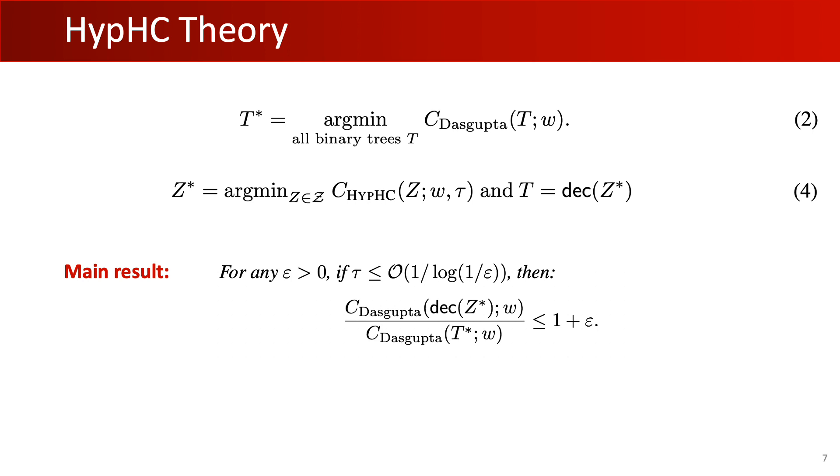This equivalence between embeddings and binary trees allows us to continuously search the discrete set of binary trees, and our main result shows that optimizing the continuous cost yields a 1 plus epsilon approximation for the discrete cost.